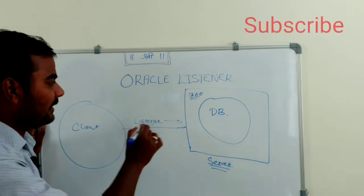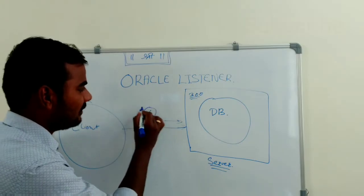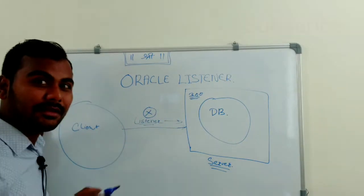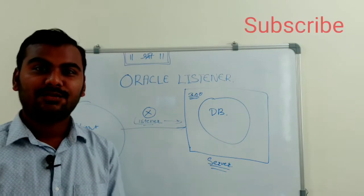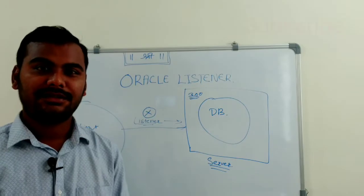Now what will happen to these 300 connections? Whether there will be any impact on these 300 connections? This is the most frequent question which I observed in most of the interviews.